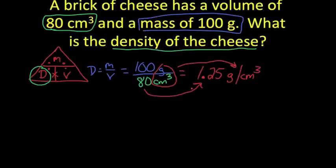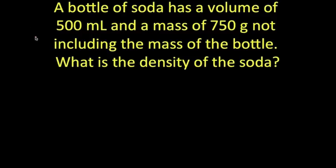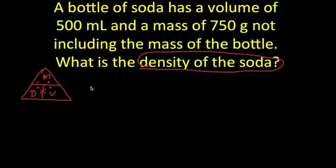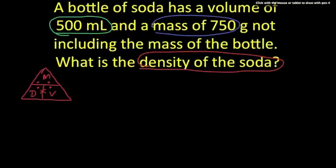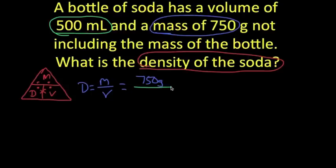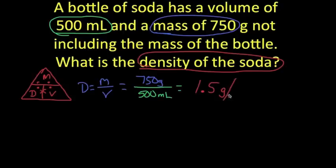Let's practice another one. A bottle of soda has a volume of 500 milliliters and a mass of 750 grams — what is the density of the soda? We set up our formula triangle again. The mass is 750 grams divided by the volume of 500 milliliters, which gives us a density of 1.5 grams per milliliter. Remember, make sure you divide grams by milliliters — that becomes our units for density. 750 divided by 500 is 1.5.